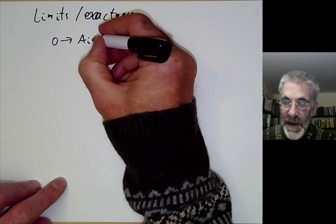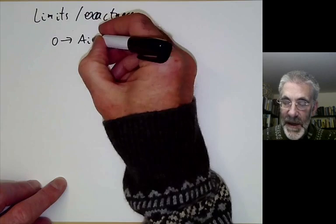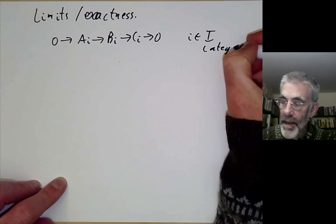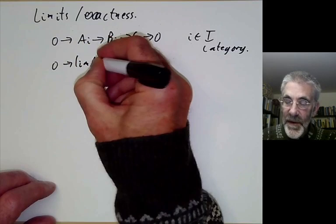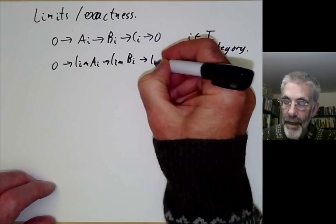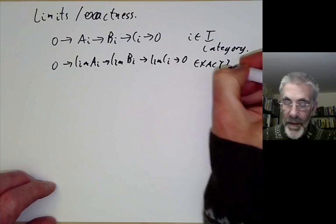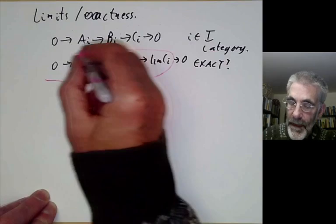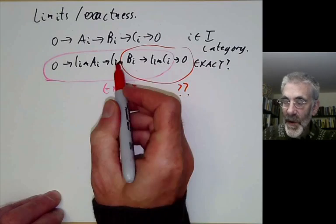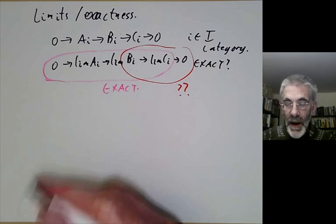The problem we want to discuss is the following. Suppose we have some sequences of modules — the a's, b's and c's are modules over some ring, and i is in some index category. We're going to take limits over i, and the question we want to ask is: if we take the limits of these sequences, is the resulting sequence exact? We saw in the previous lecture that part of it is always exact, and the problem is whether the limit of the b_i maps onto the limit of the c_i.